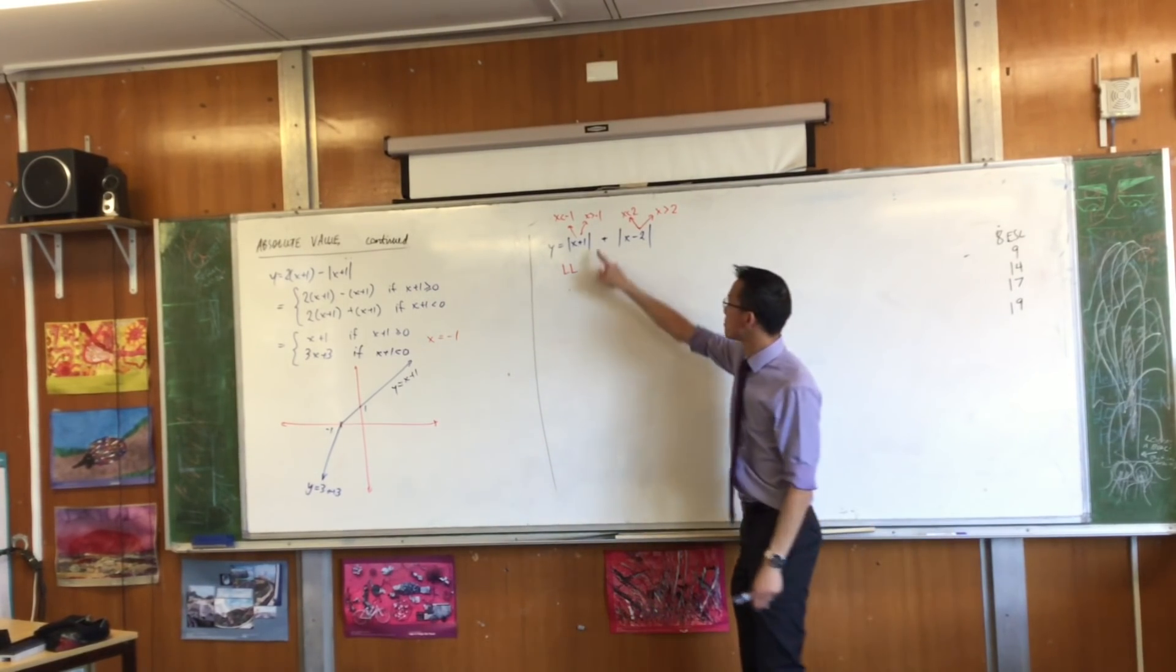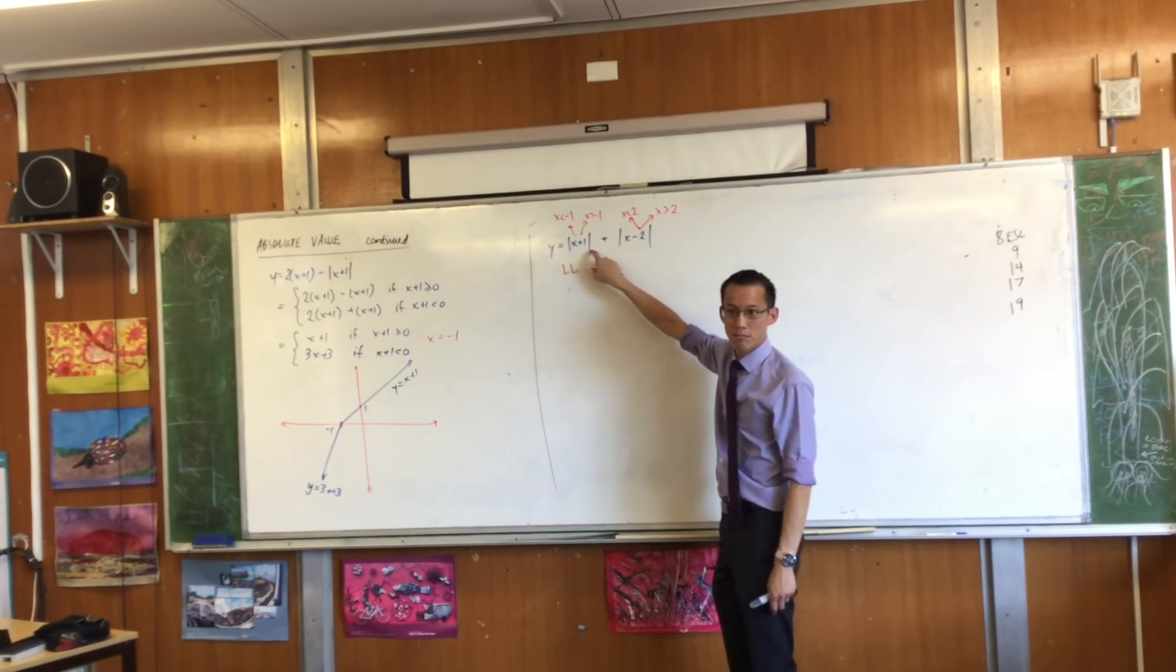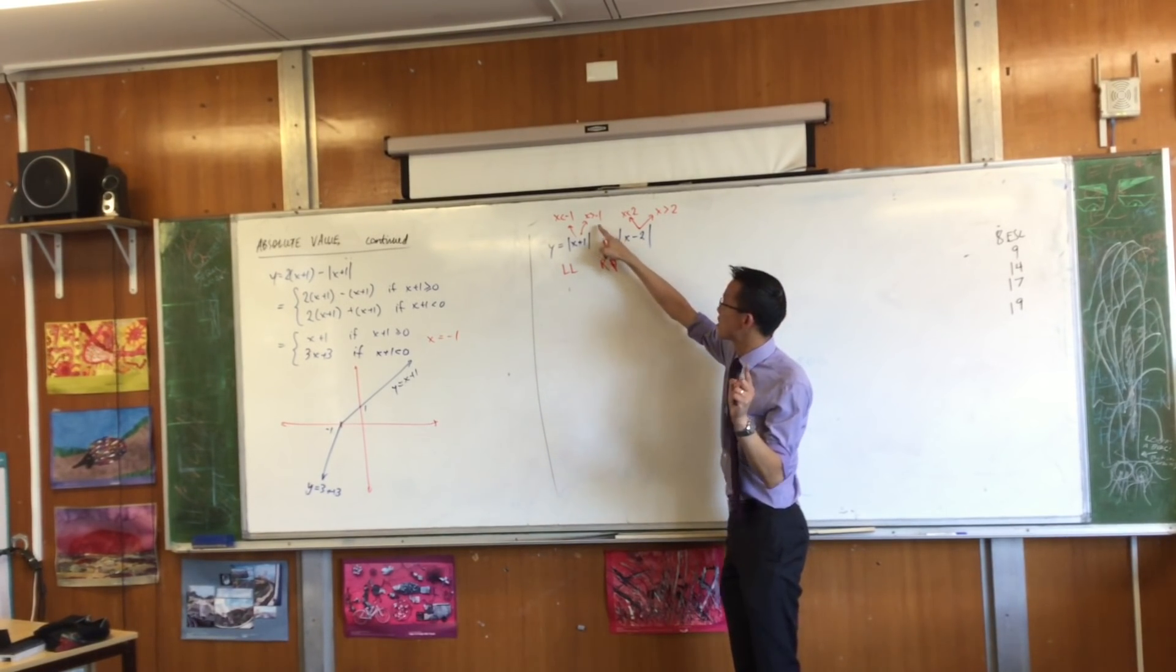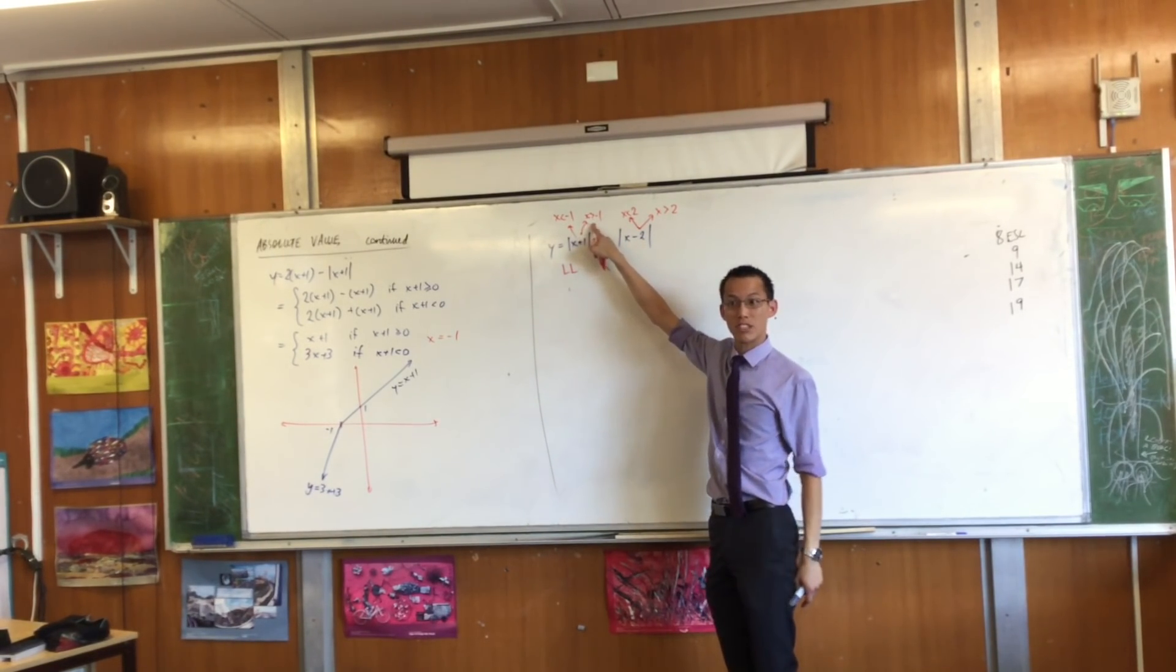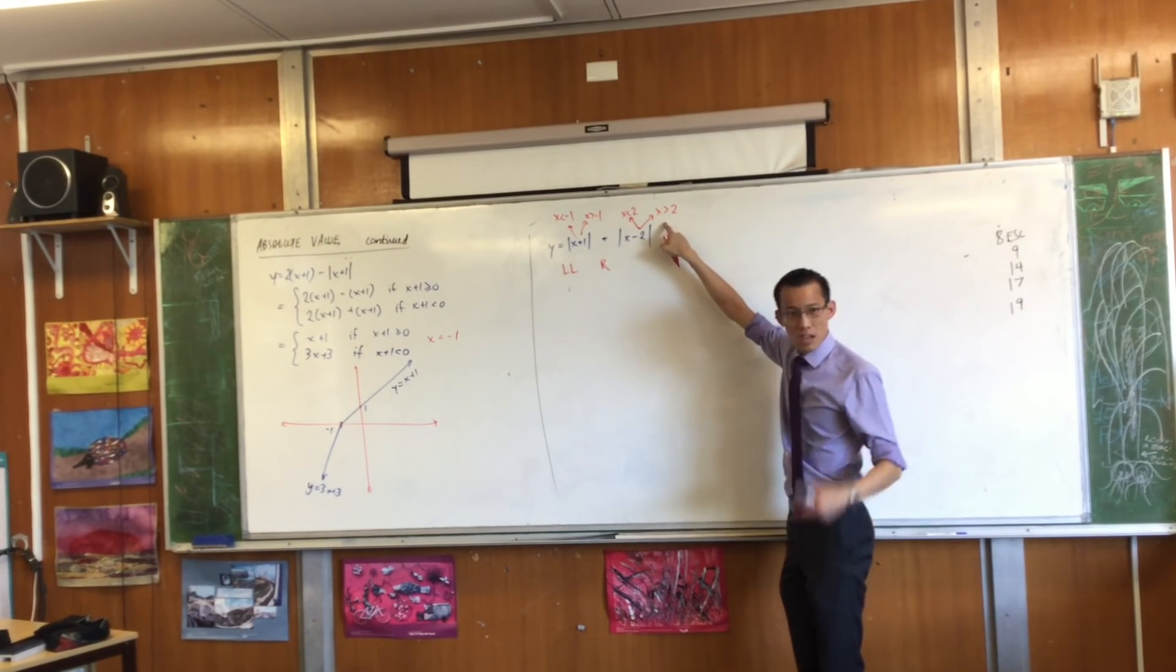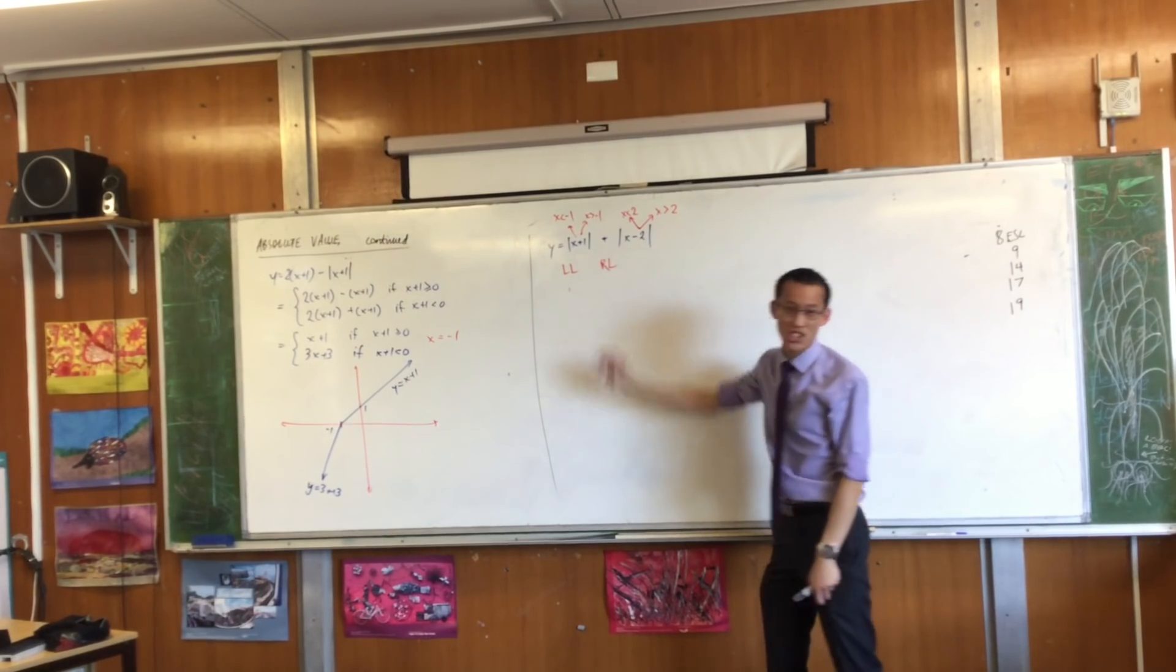Then I cross over and pass by negative one. What happens to this guy? It switches over to become the right version. But say I was like at x equals zero. Look at this one. Which version am I using right now? I'm still using the left version. I haven't passed by two, so he hasn't changed. Do you agree?